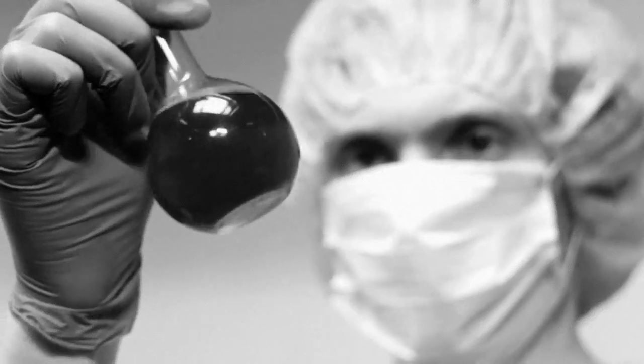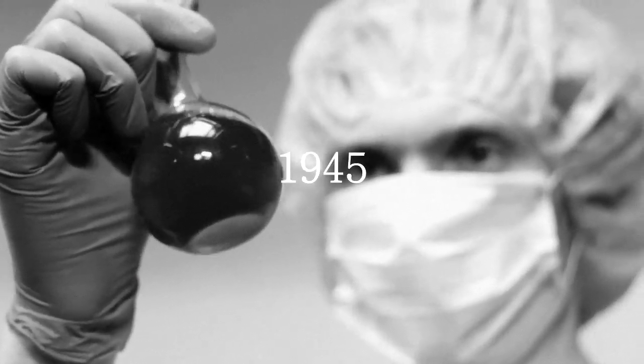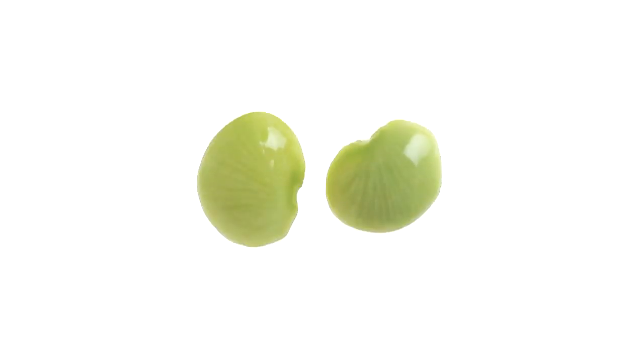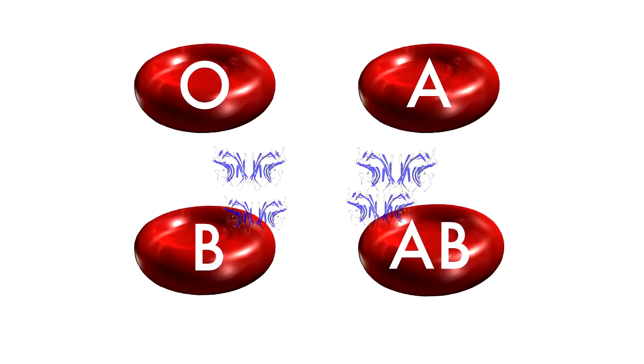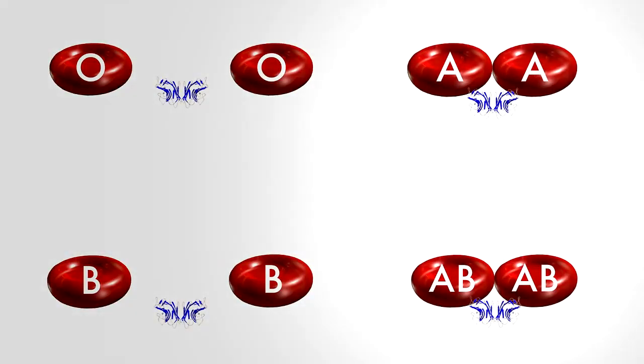It was first discovered that lectins can bind human cells in 1945 by a scientist named William Boyd. During an experiment with lima beans, he found that the bean lectins stuck together the red blood cells of people with blood types A and AB, but not types B or O.